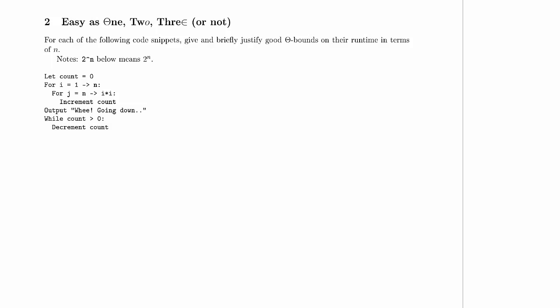It says, for each of the following code snippets, give and briefly justify good theta bounds on their runtime in terms of n. Somewhere below, we're going to have something that looks like 2 caret n, and that's just 2 to the n, 2 raised to the power of n.